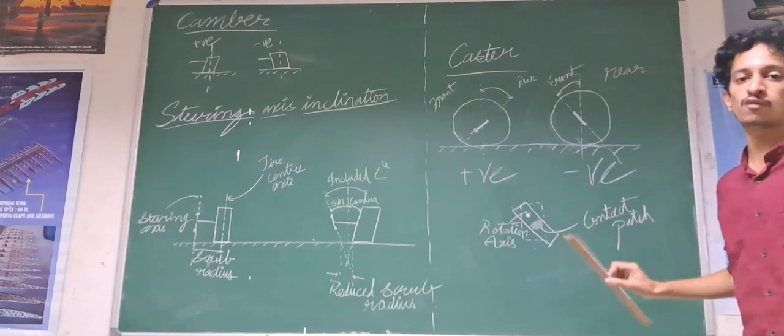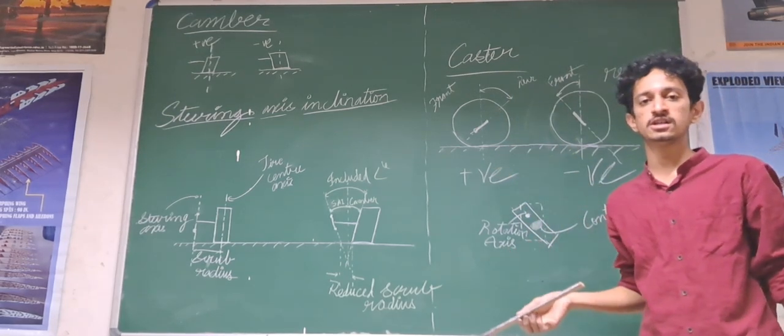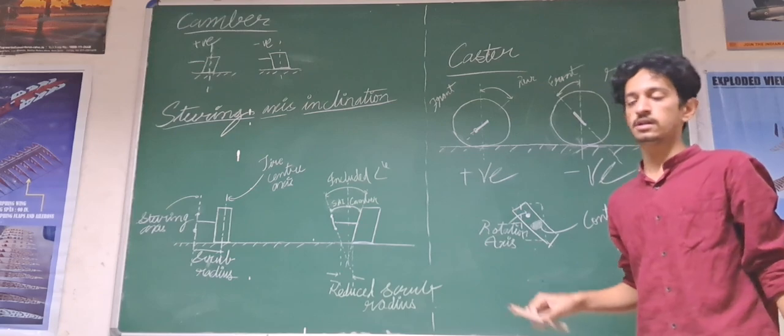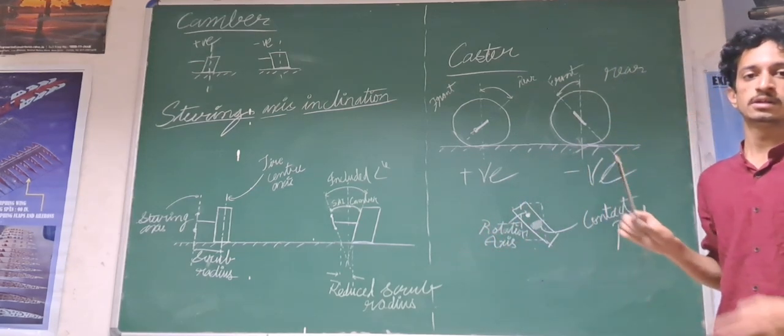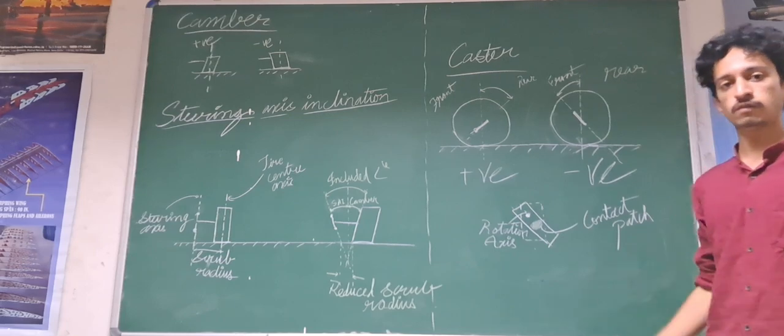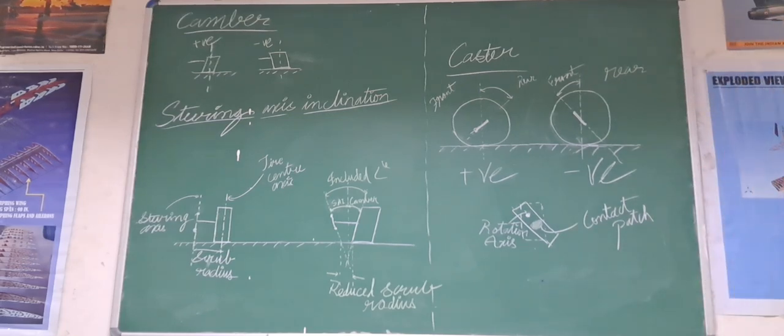Due to positive caster, the wheel follows the steering axis due to which your vehicle is stable. All of these angles contribute to the controlled tire wear and proper steering of your vehicle. Thank you.